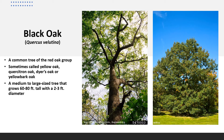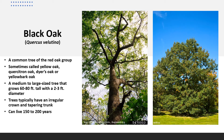Black oak is a medium to large size tree that typically grows 60 to 80 feet tall with a 2 to 3 foot diameter. However, on good forest sites, it may grow more than 120 feet tall and have a 4 foot diameter. Trees typically have an irregular crown and a tapering trunk, and can live to be about 150 to 200 years old.